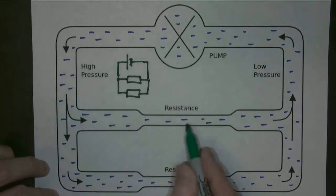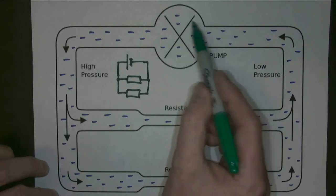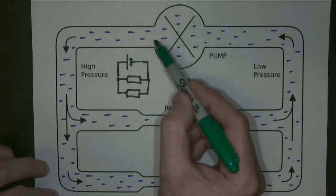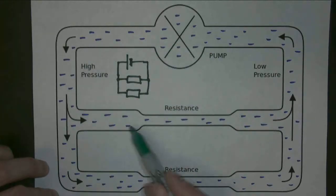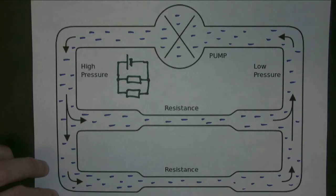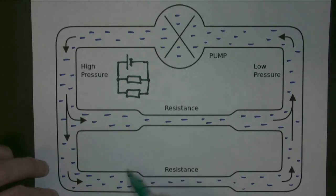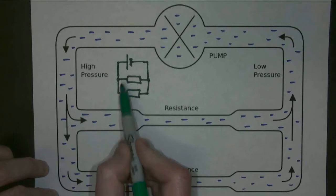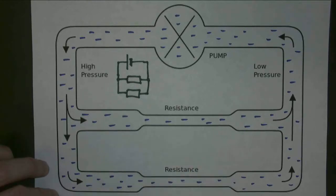This is a bit like a heating circuit in a house. A pump pumps water around the house and the water has to flow through the different radiators. They're all wired in parallel so you can switch each radiator off individually. In the same way you can put a switch here or here to switch each of these resistors off.